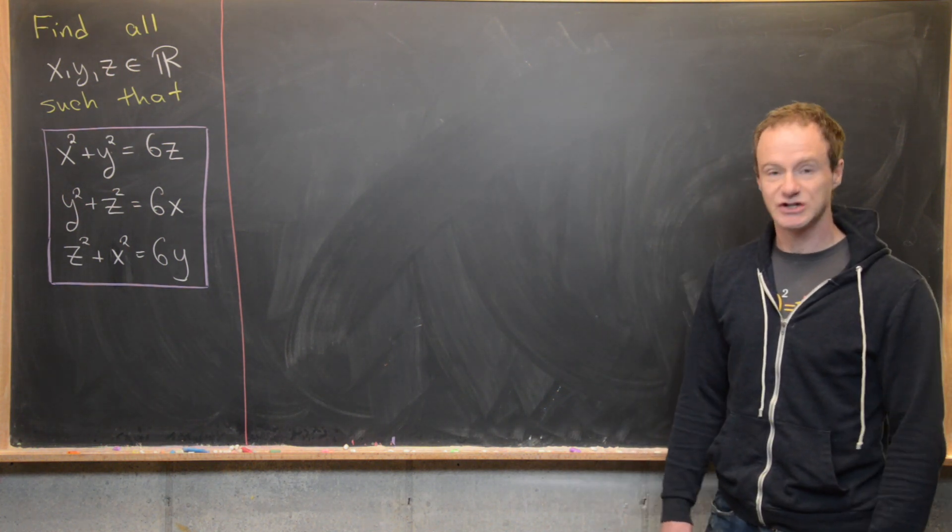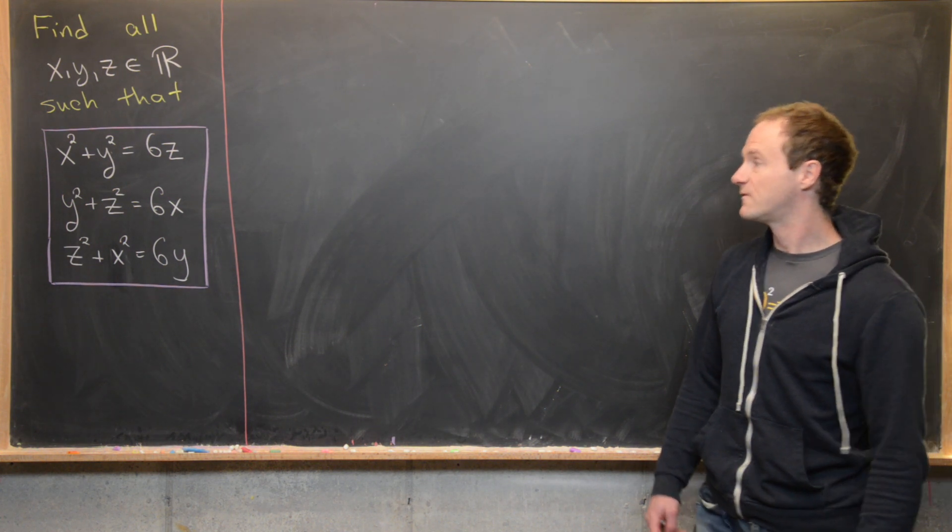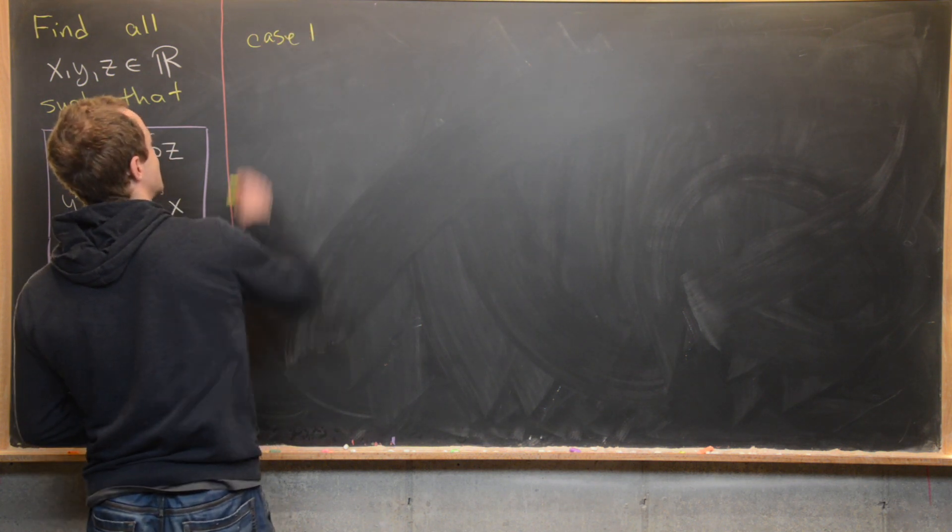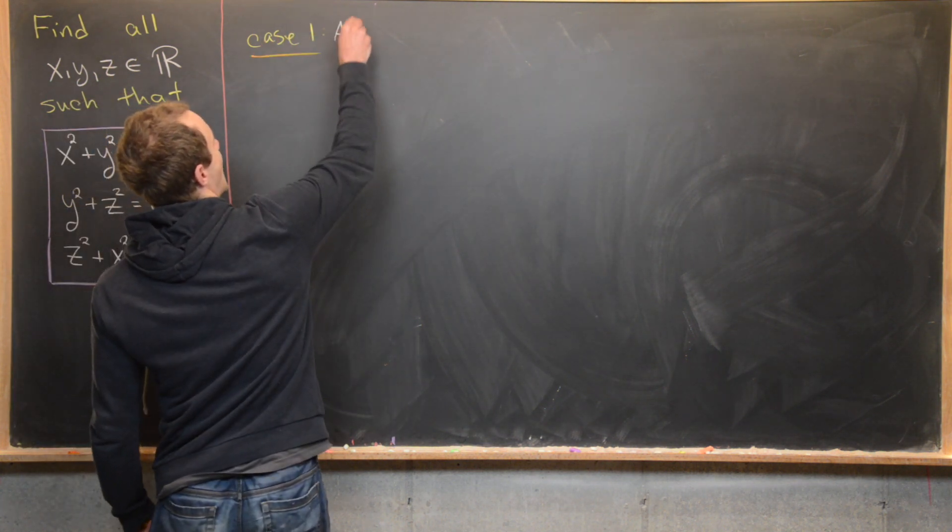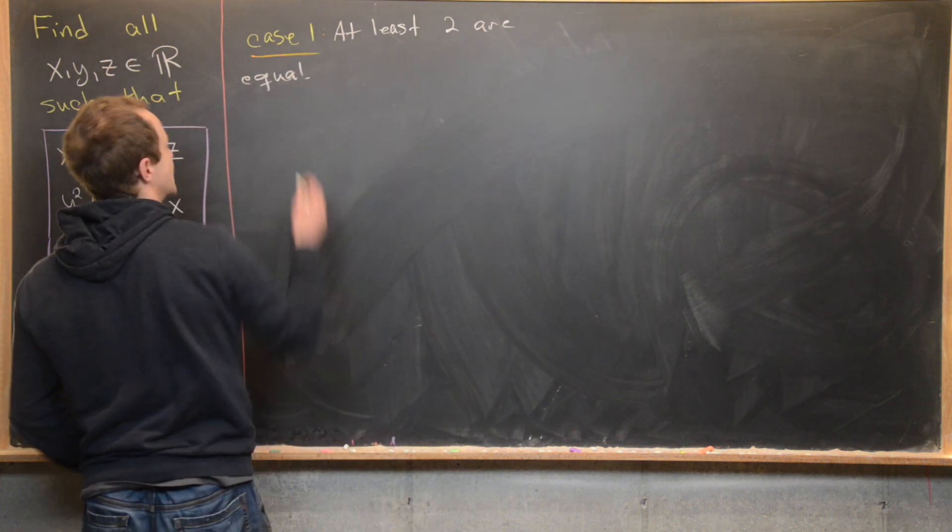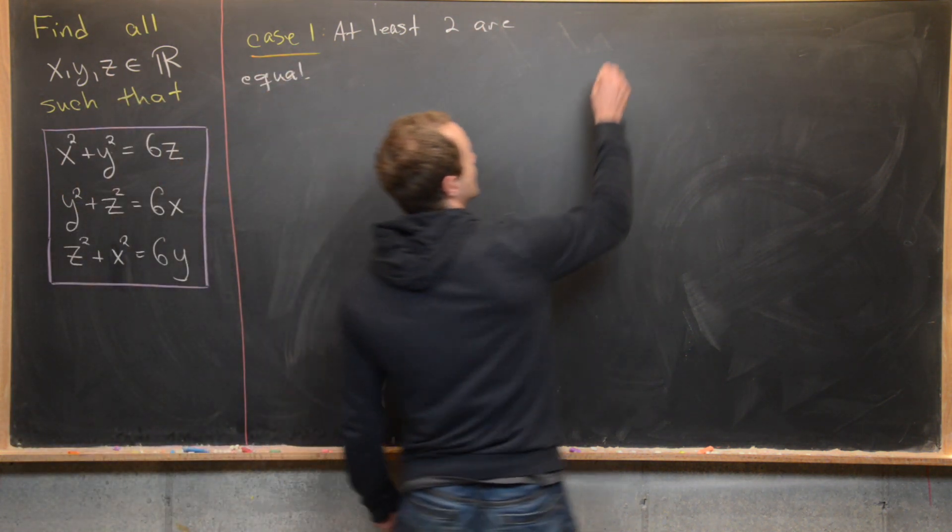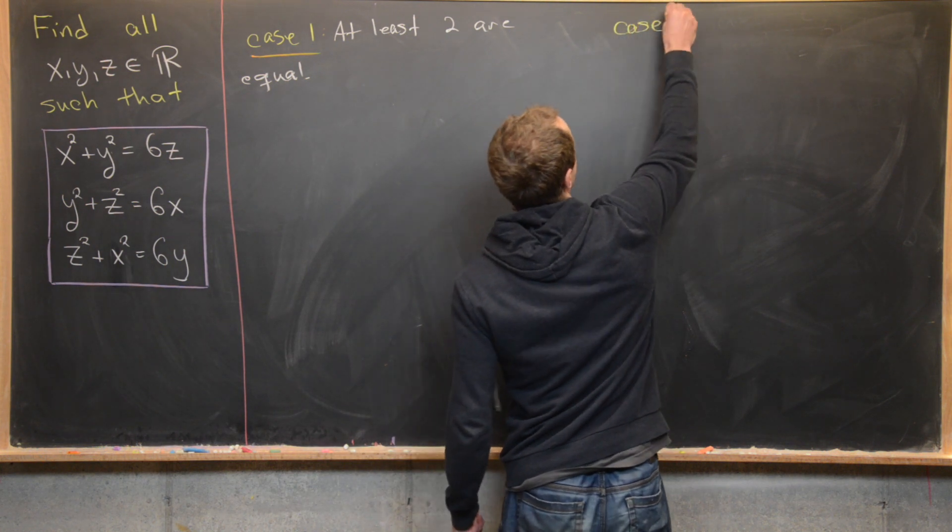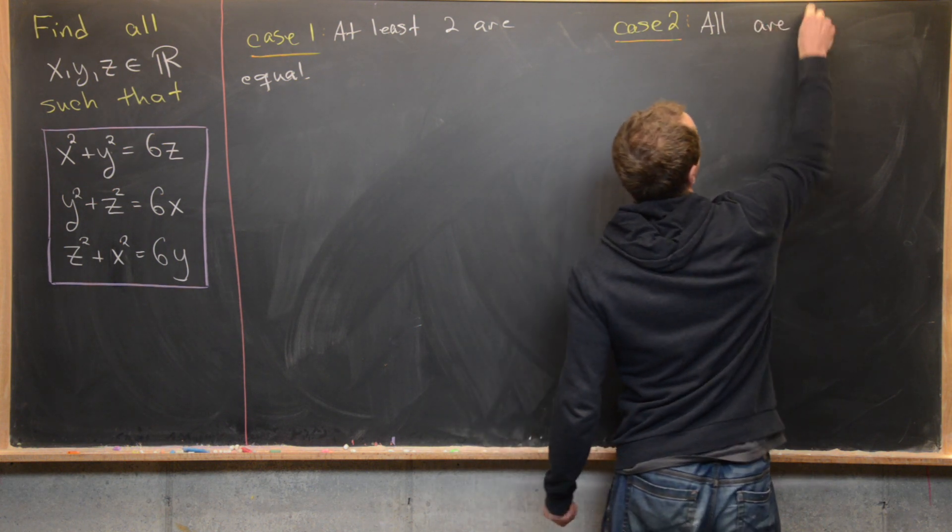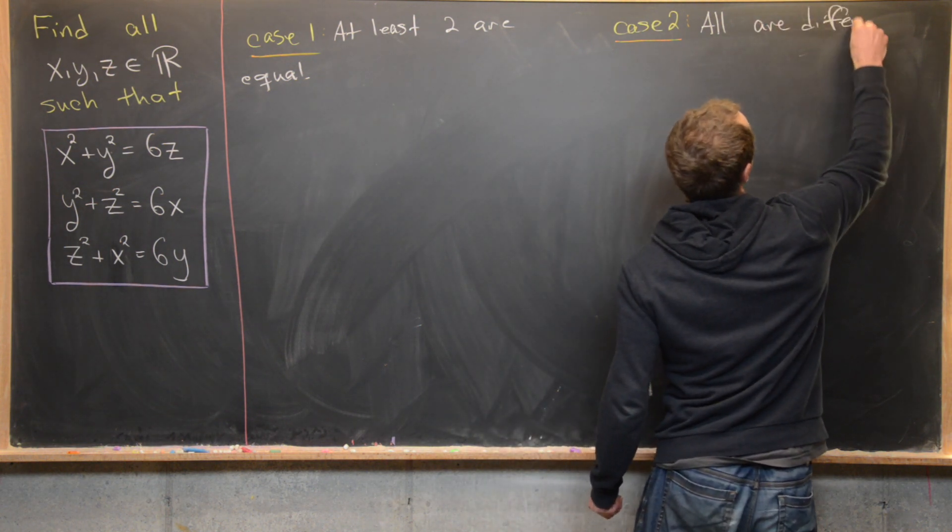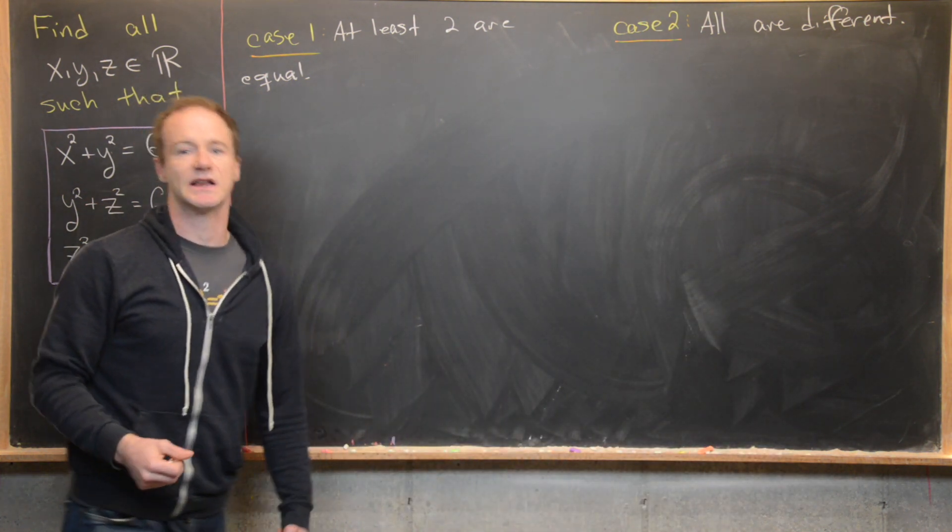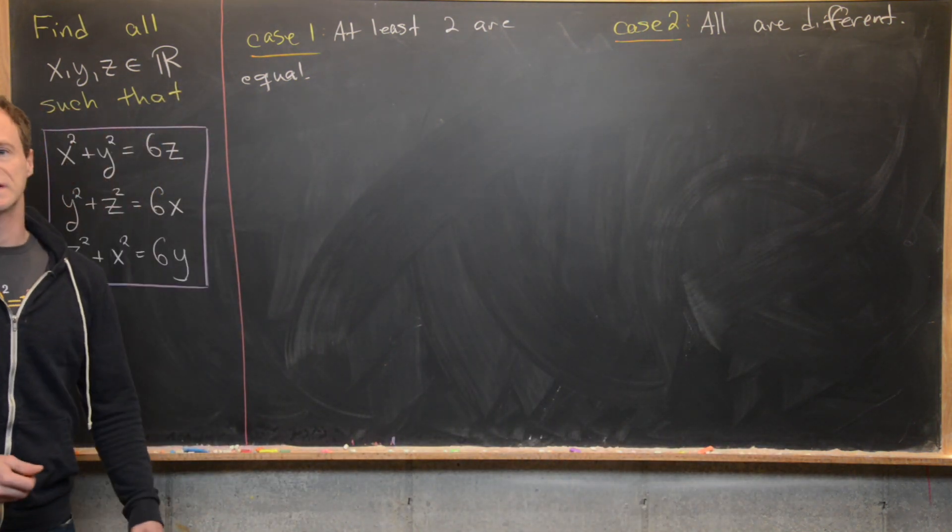I'm going to break this down into two cases. The first is when we know at least two of these are the same, so at least two are equal. And then my second case will be all are different. So in other words, x is not equal to y, y is not equal to z, and x is not equal to z. But we're going to look at these totally separately.